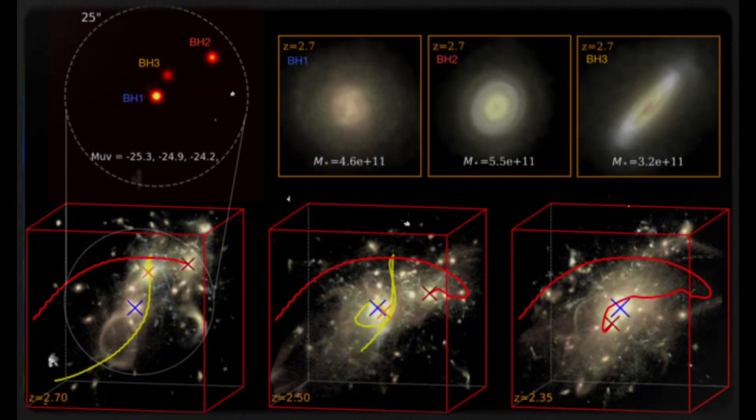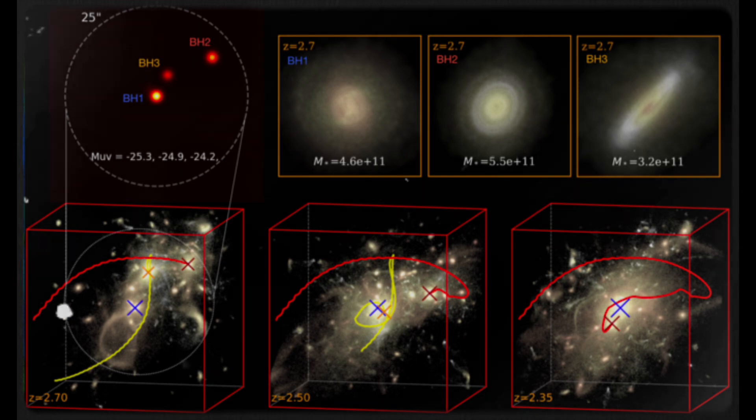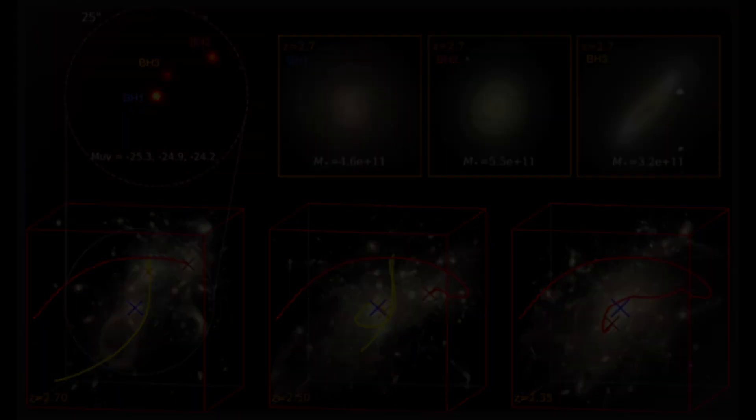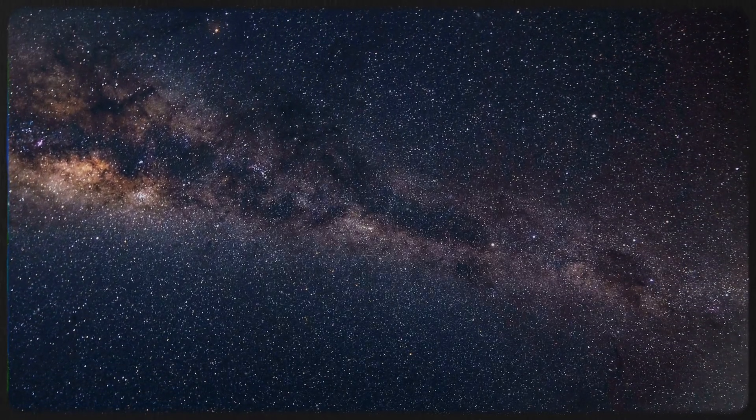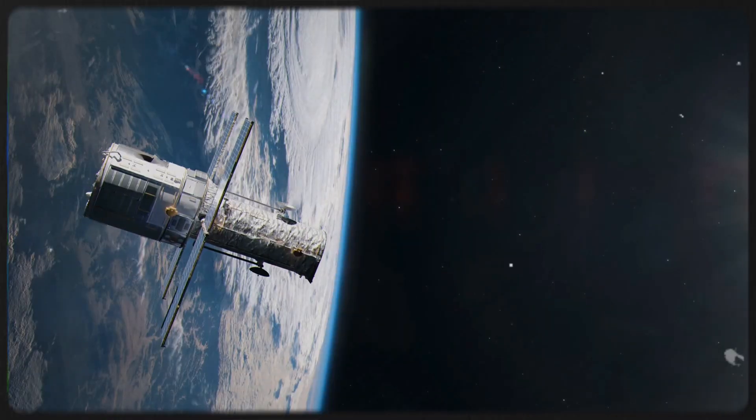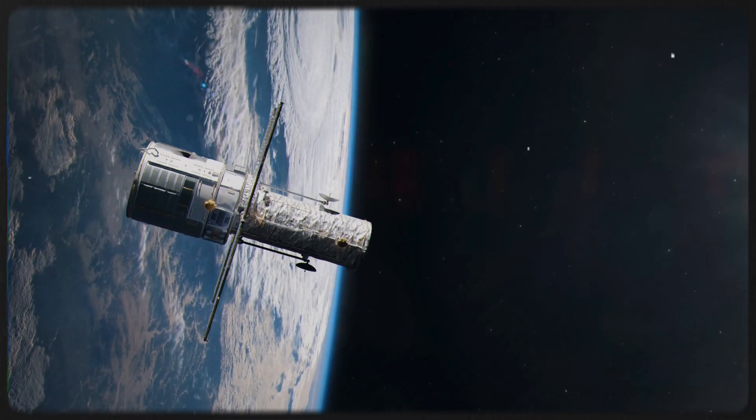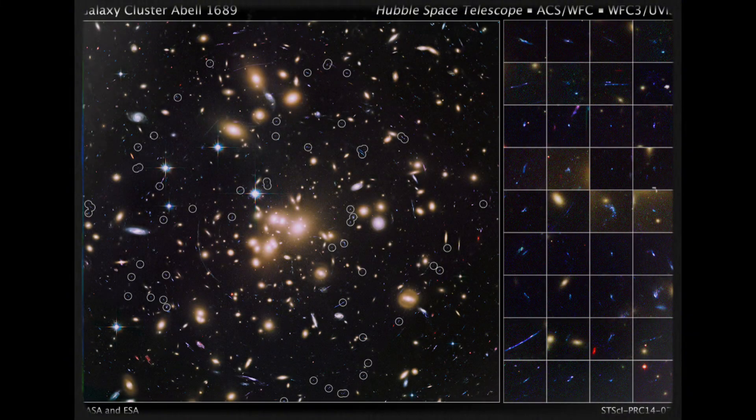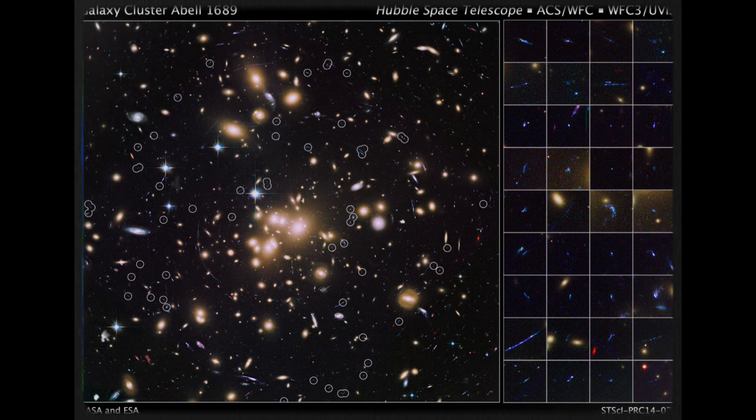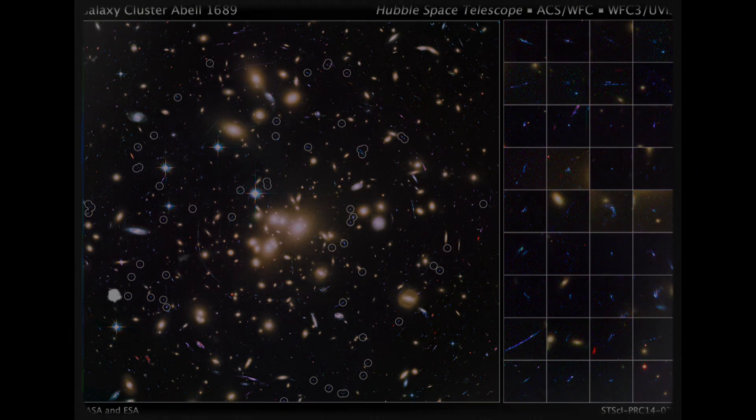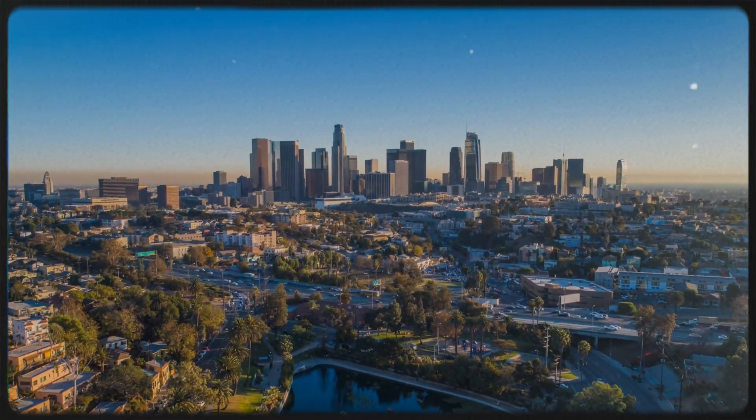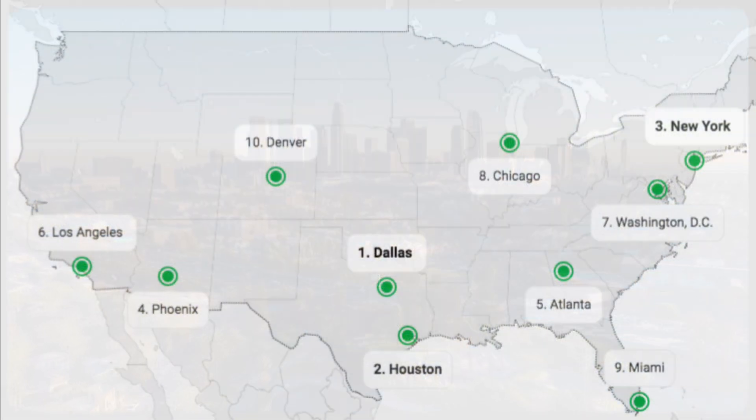The Hubble Space Telescope first spotted the seven galaxies, but it couldn't measure the exact distances between them despite viewing them from the same angle. It's like looking from above Los Angeles and seeing cities like Phoenix, Dallas, and Atlanta without knowing their distances.